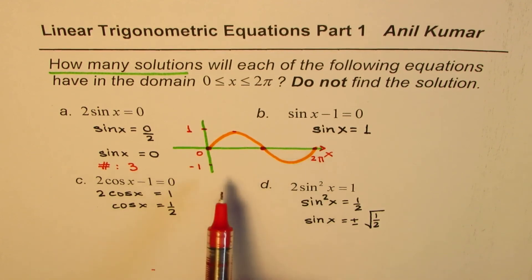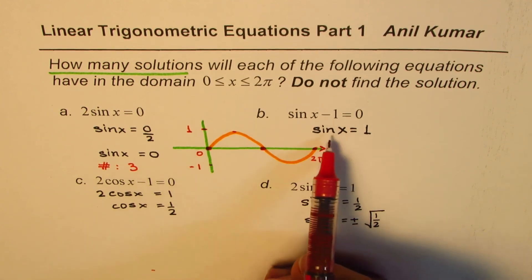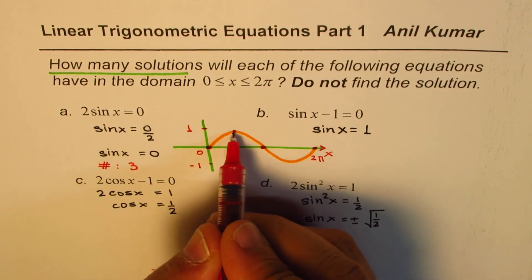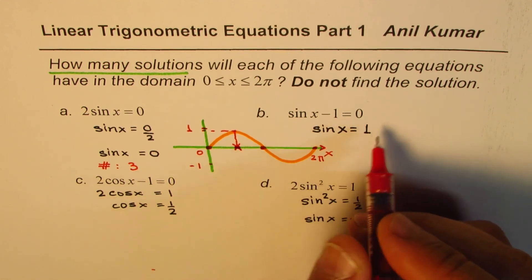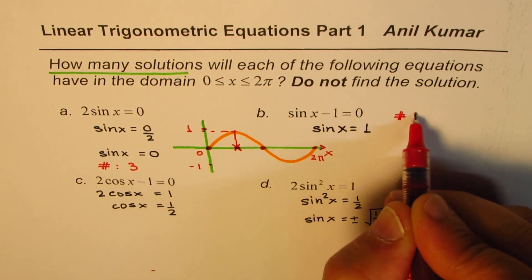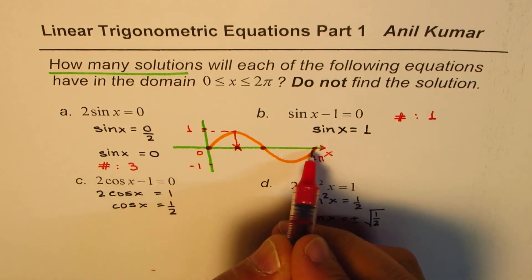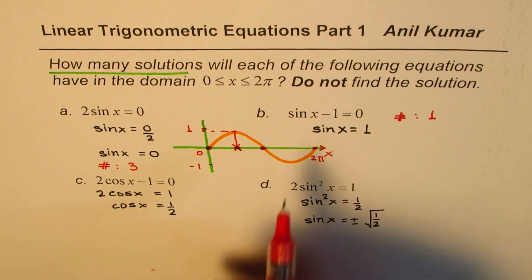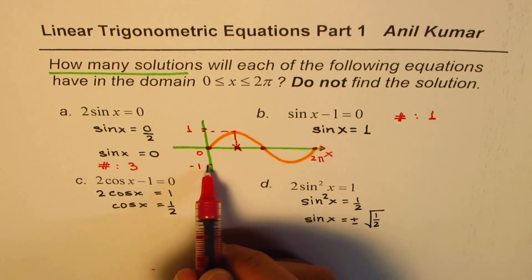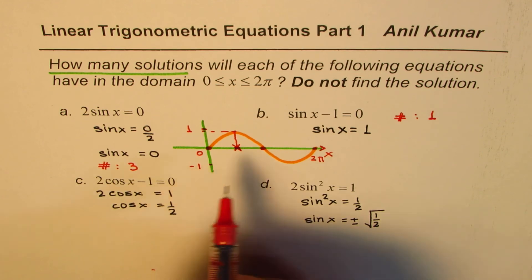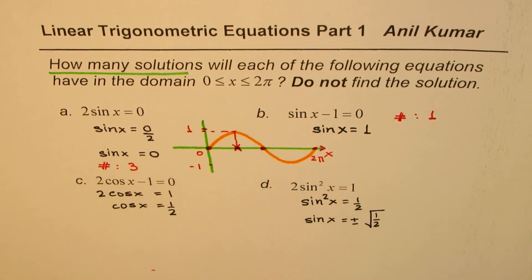The next equation simplifies to sin x = 1. Sine x equals 1 for only one value in the graph, so the number of solutions is 1. Similarly, there is only one value of x between 0 to 2π where sin x = −1. And there are no values where sin x is greater than 1 or less than −1.